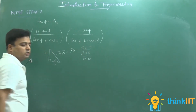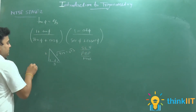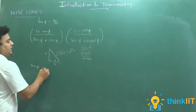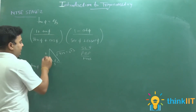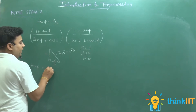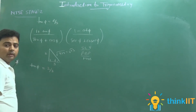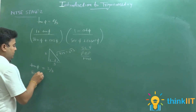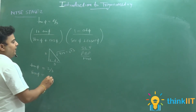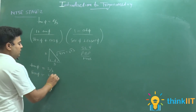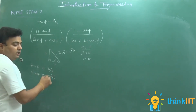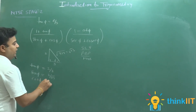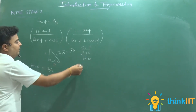तो tan θ = P/B = perpendicular/base = 2/3। Next, sin θ = P/H = perpendicular/hypotenuse = 2/√13। Next, cos θ = B/H = base/hypotenuse = 3/√13।